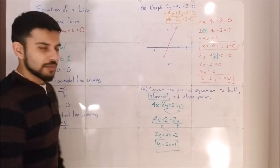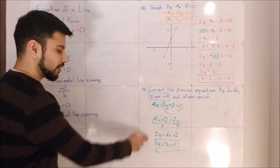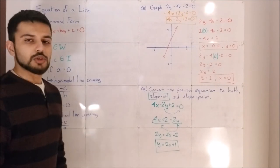The last thing is I need to get y by itself, and the only way I can do that is divide both sides by 2. That takes the 2 out of y, and I'm left with y equals 2x plus 1. That is slope-intercept form.